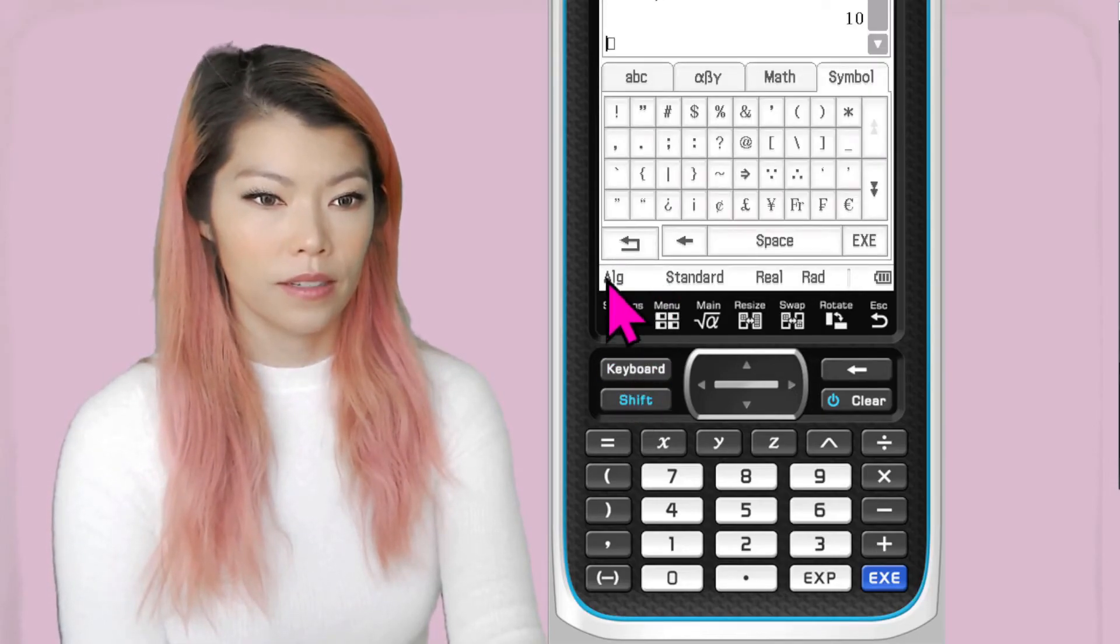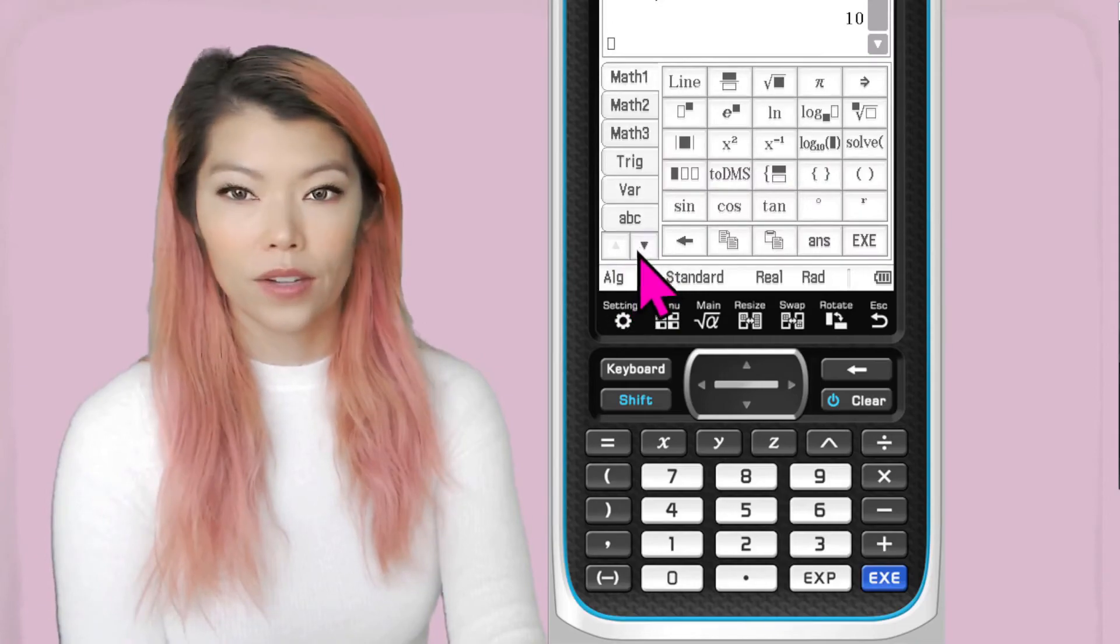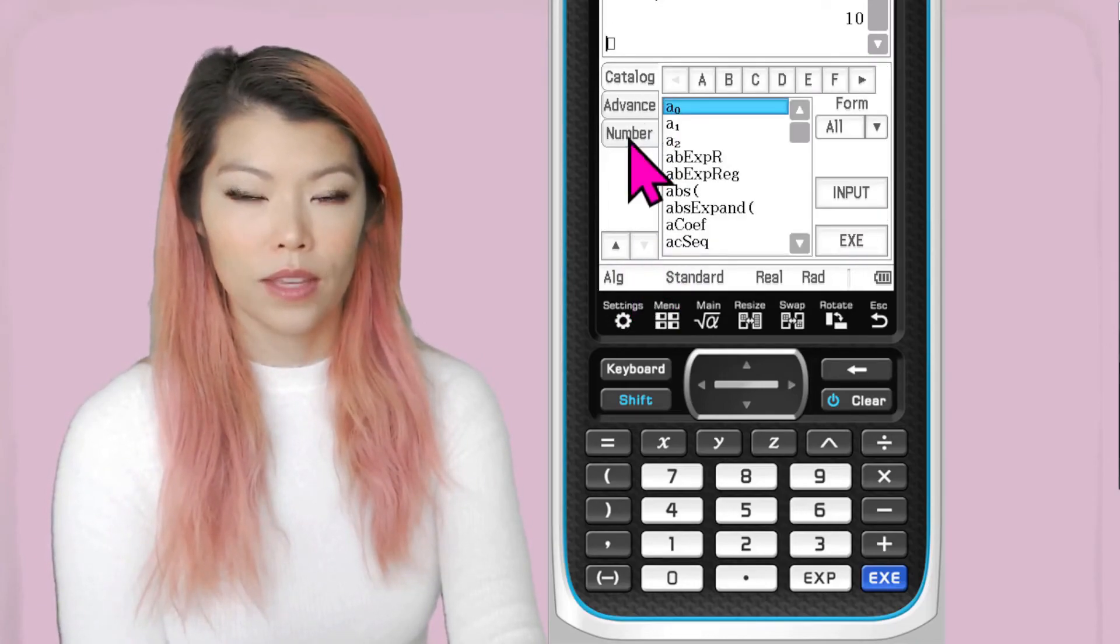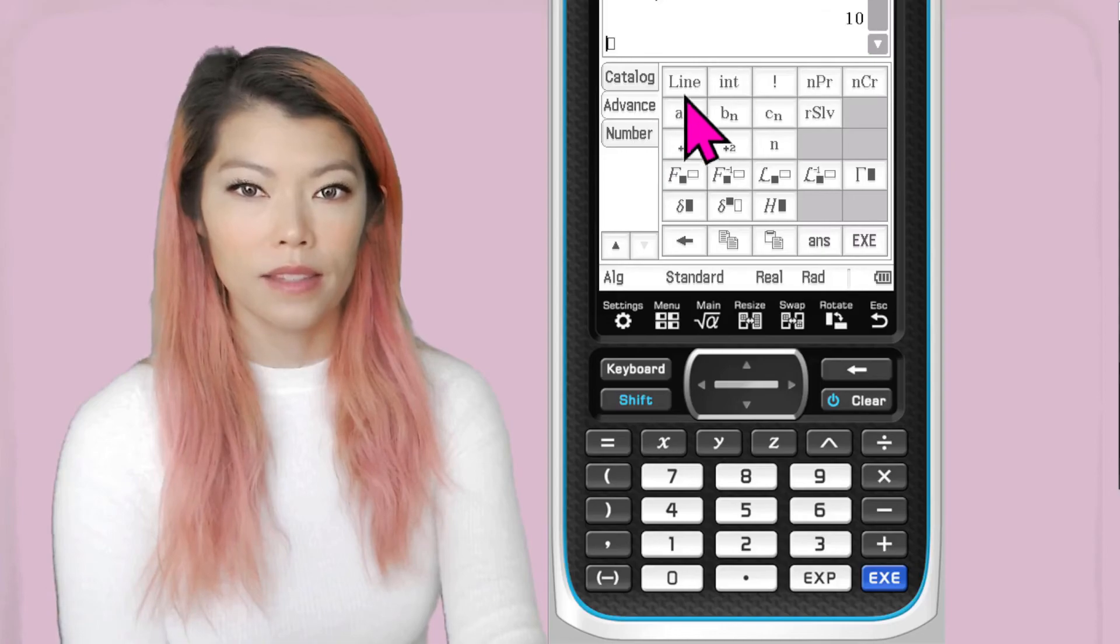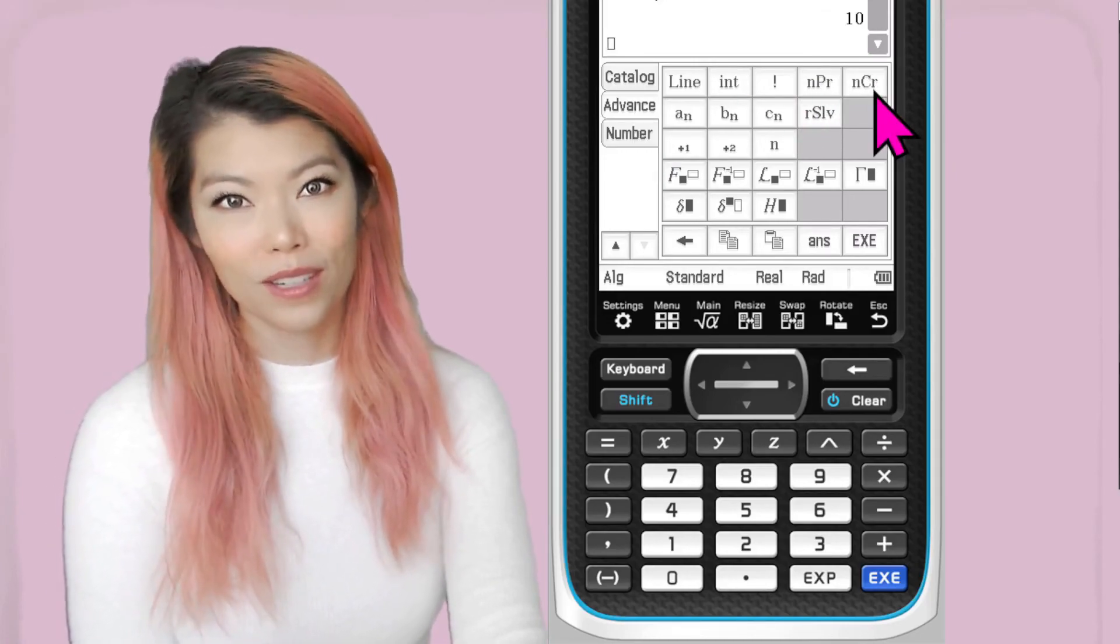And Keyboard, if you click on the down button, it will take you to this where you click on Advance and NPR and NCR is over there. Thanks for watching and I'll see you next time. Bye!